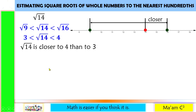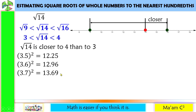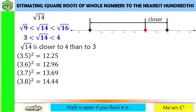Now, I'm going to square numbers with one decimal place that is closer to 4 but not greater than 4. These numbers are 3.5 squared, 3.6 squared, 3.7 squared, and 3.8 squared. Since 3.8 squared is already beyond 14, I don't need to get 3.9 squared. We also don't need 3.1, 3.2, 3.3, or 3.4 squared because we are looking for numbers closer to 4 than to 3.